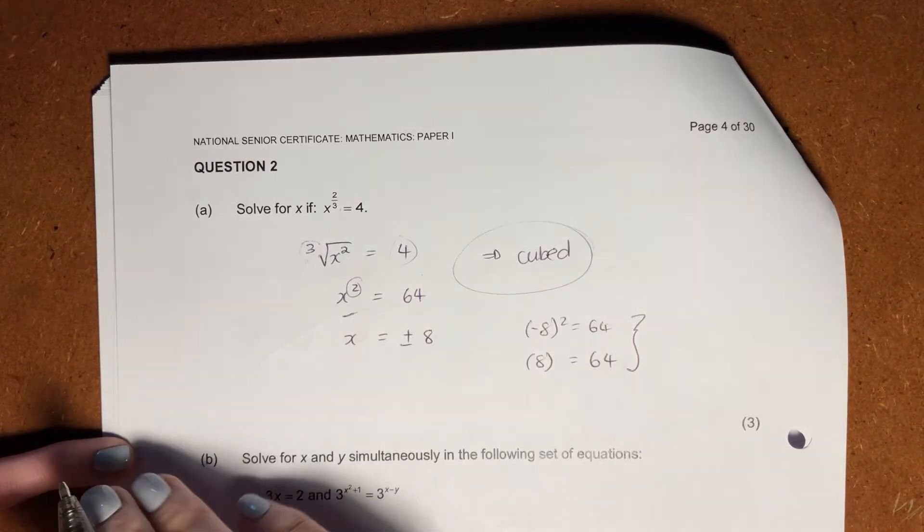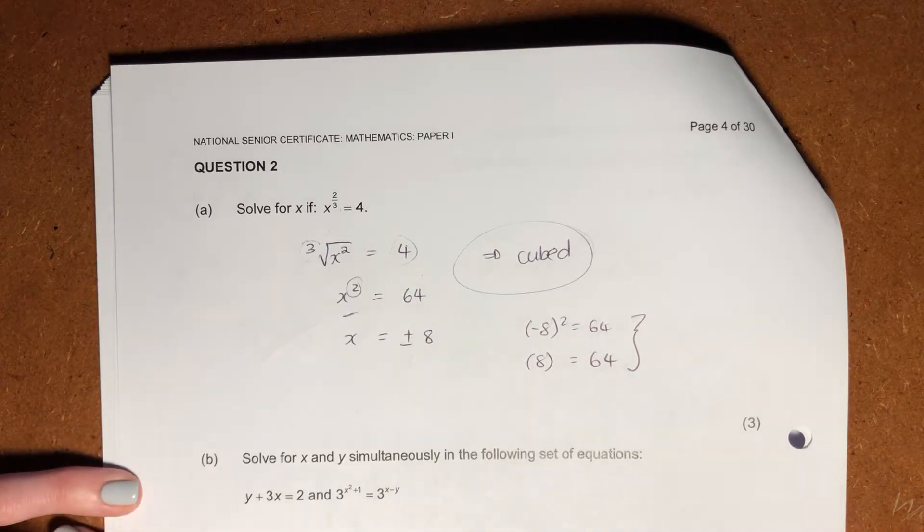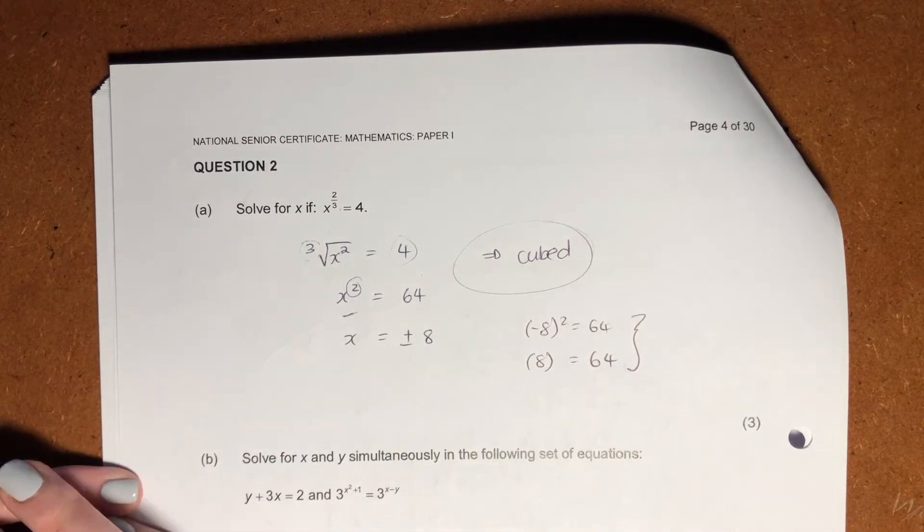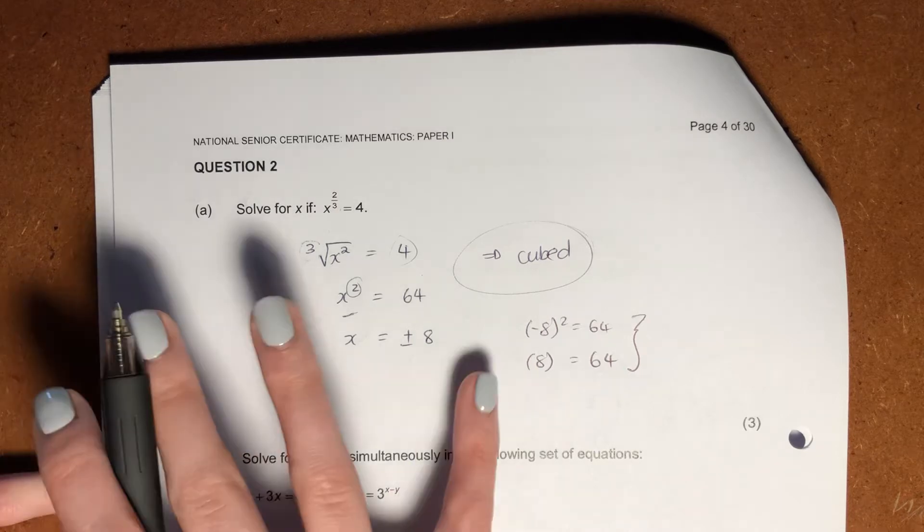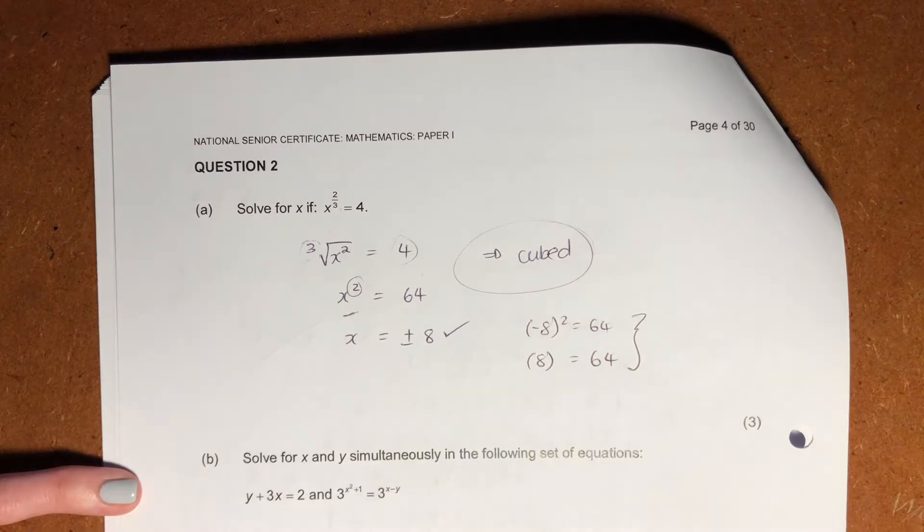You don't have to check your answer because it's cubed. We mainly have to check when it is squared or any even number. Cubed is an odd number. Any even number root or square, you have to do a bit of checking. Here we do it. That is us done. So that would be our marks. We've got our three marks. Fantastic.